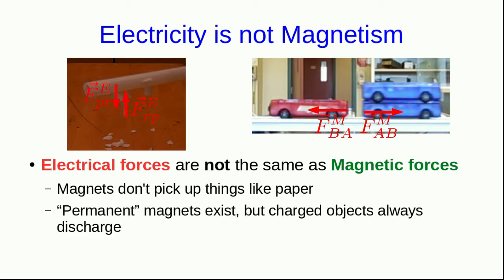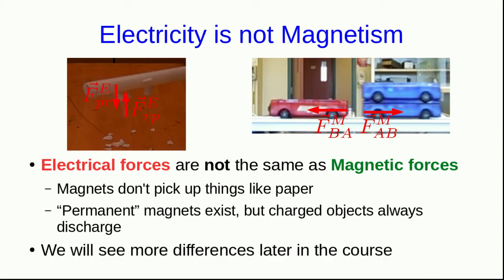They only pick up very specific things like steel. Also, there is such a thing as a permanent magnet, which will maintain its magnetism for a very long time. But charged objects always discharge. So these are just some ways that electrical interactions are different from magnetic interactions. We'll see more differences later in the course when we study magnetic interactions in more detail.